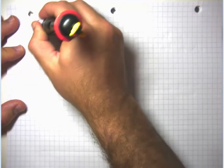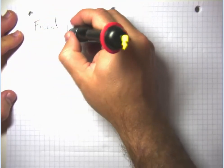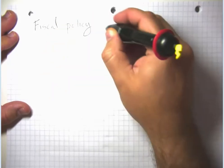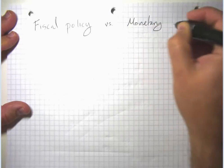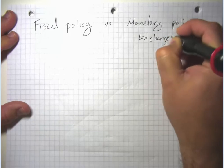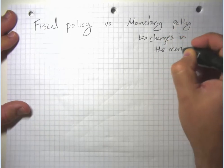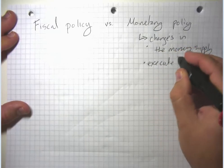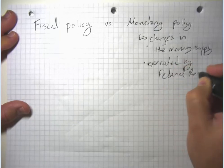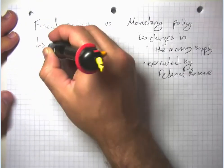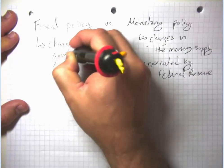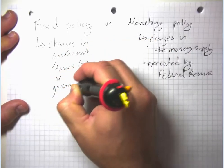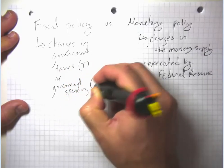I'm going to talk about a second tool that the government can use to change the level of aggregate demand, and that's fiscal policy. Monetary policy is about changes in the money supply, executed by the Federal Reserve or other central bank. Fiscal policy is about changes in government taxes, we often call T, or government spending, which in our GDP accounting equation is G.